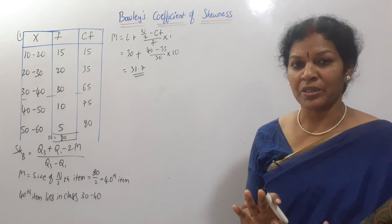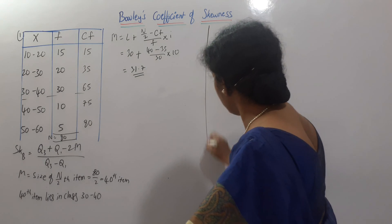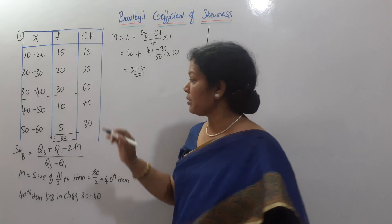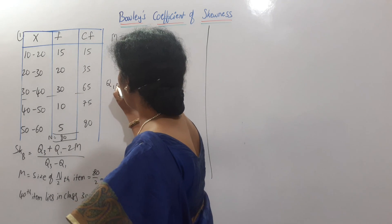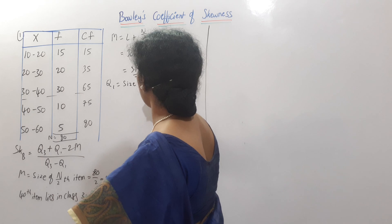Next, next Q1 is over, next Q1, shall we draw like this, yes. Next, Q1, Q1 also first formula is size of N by 4th item.